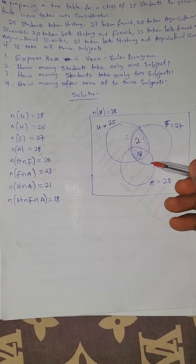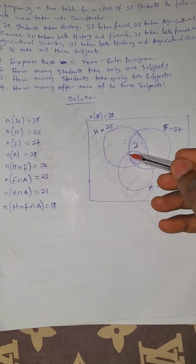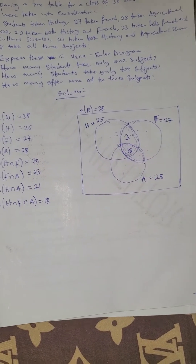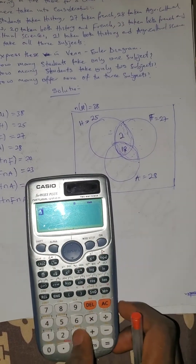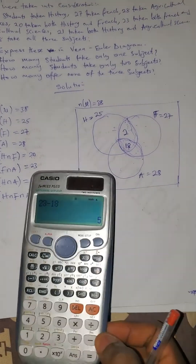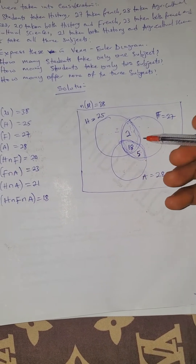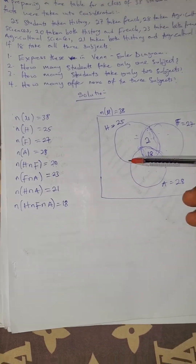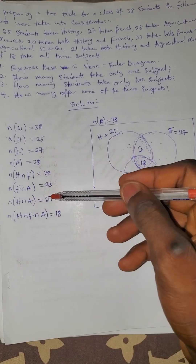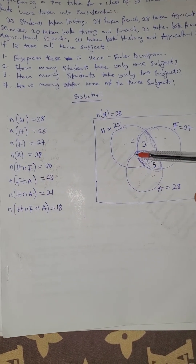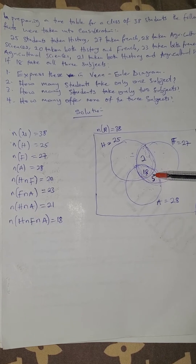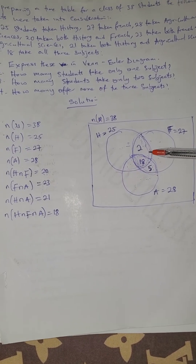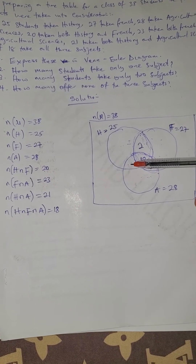French and Greek is 23. This place in the French and Greek intersection must be 23. Since the all-three region is 18, French and Greek only equals 23 minus 18, which is 5. So 5 plus 18 gives 23, confirming French intersection Greek. History and Greek is given as 21, placed in the History-Greek intersection region.